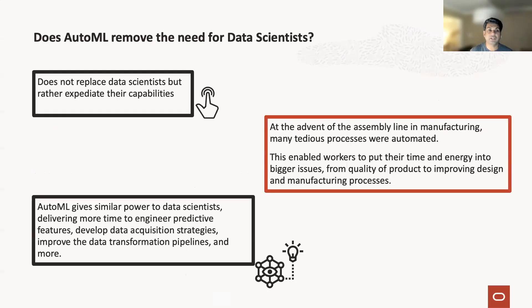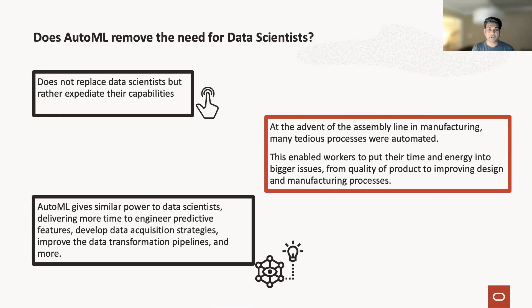A lot of people said, 'Is this going to replace data scientists?' It's not going to replace data scientists. It's just going to give people more time to engineer better predictive features and develop better data acquisition strategies and pipelines. It's going to make you a better data scientist — like how all the optimizer features that have come into the database have not obsoleted the DBA. This is not going to obsolete the data scientist, but certain parts of the process are no longer required because the AutoML framework is very good at doing them.